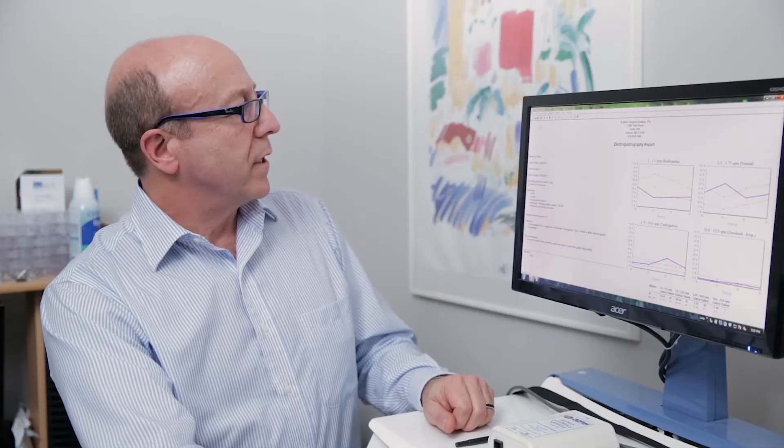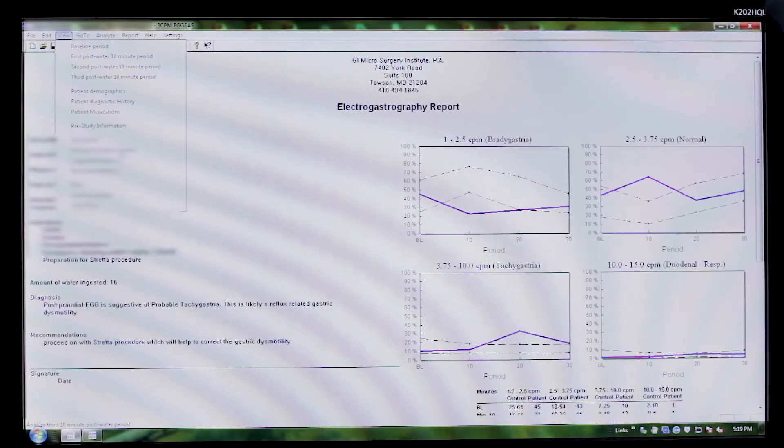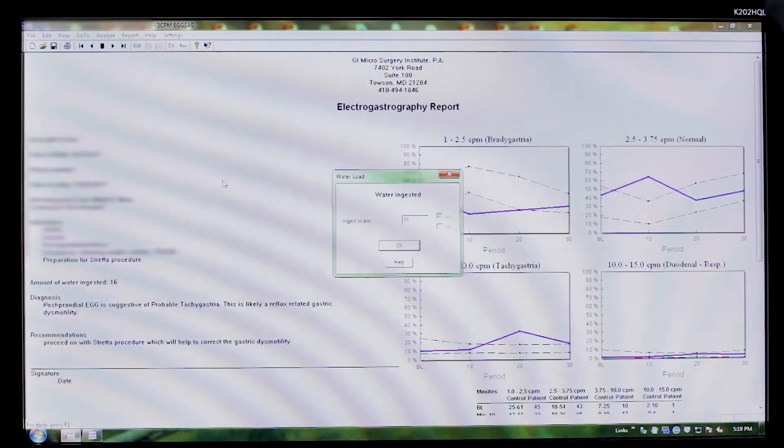Another important thing to take a look at is also the amount of water ingested. This is important because we know that a normal amount of water is approximately 600 cc's worth of water, or about 16 ounces. And if you find a patient who can only drink, let's say, two or three ounces or only 200 or 300 cc's of water, you know that there may be an accommodation issue with this patient in addition to any other gastric motility disturbance.